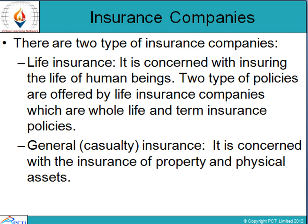In the case of a term insurance policy, the benefits of the insurance are available for the term of the policy only; beyond that the benefits are not available. Upon completion of the term or upon the death of the policyholder, whichever is earlier, the maturity value of the policy would be paid to the beneficiary. Another is general insurance or casualty insurance, which is basically concerned with property and physical assets. A general insurance company collects premiums, invests them, and makes payment to the policyholder for any specified losses. General insurance provides coverage for a short period, generally ranging up to 3 years.